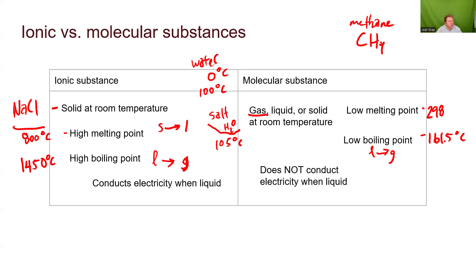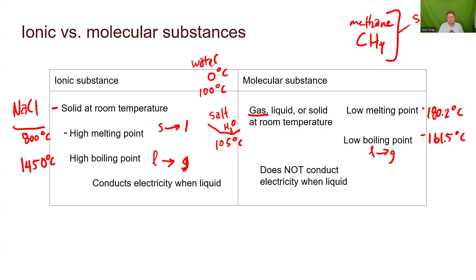The melting point for methane is approximately negative 180.2 degrees Celsius. So if you dropped methane down to negative 200 degrees Celsius, it's going to be a solid. Methane is going to be a liquid at around negative 170 degrees Celsius, and a gas at anything greater than negative 161.5 degrees Celsius. So at negative 160, it's going to be a gas.